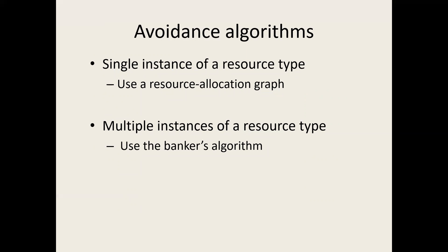The algorithms for deadlock avoidance include the resource allocation graph for simple cases with single instances and few resources. For multiple instances and many concurrently executing processes, the resource allocation graph becomes very complex. So for multiple instances, we use a different algorithm based on calculations — we call it the Banker's algorithm. We will see how the Banker's algorithm works.